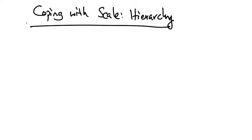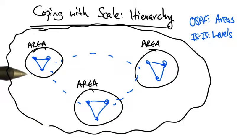One way of coping with scale is to introduce hierarchy. OSPF has a notion of areas, and ISIS has an analogous notion of levels.